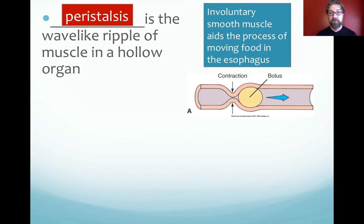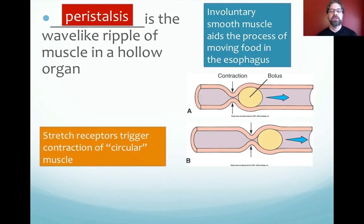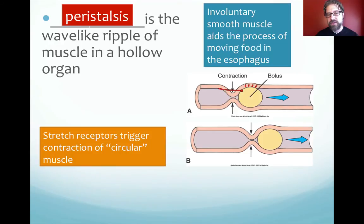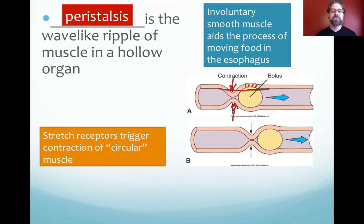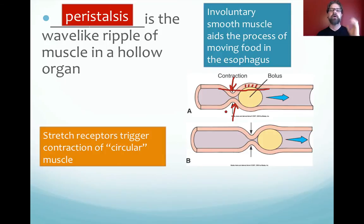Peristalsis works because of the anatomy of the esophagus's layers. Stretch receptors in the outer layer are triggered when food pushes through, stimulating the circular muscles surrounding the esophagus to contract down. As soon as food passes through, the muscles close in, pushing the food forward. The circular muscles surrounding the esophagus, when stretched, react by contracting and squeezing the food forward toward the stomach.